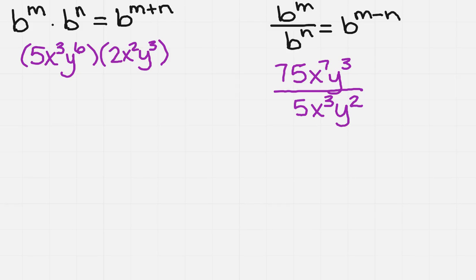We want to look at how to find the product and the quotient for exponents. I've written the actual rules on the top of each one of these columns, multiplication on the left and division on the right.